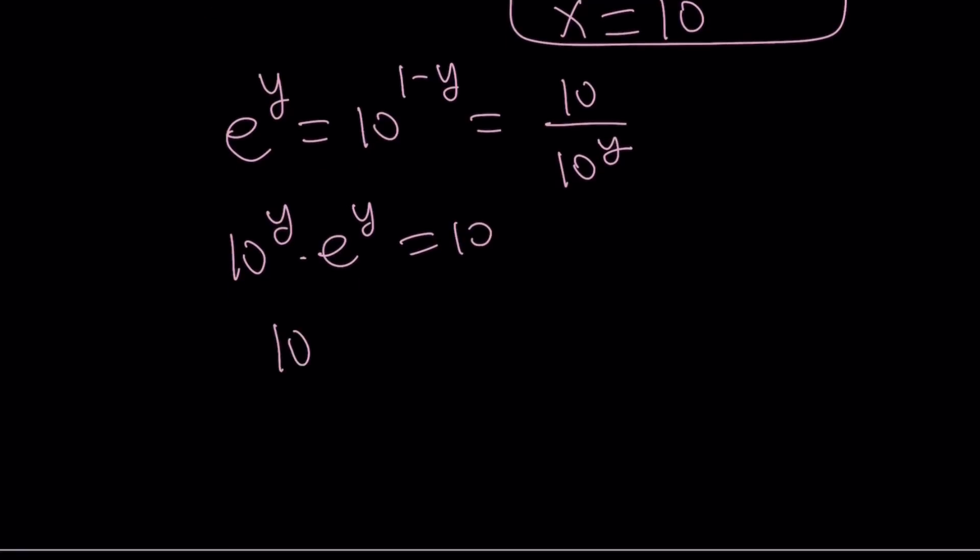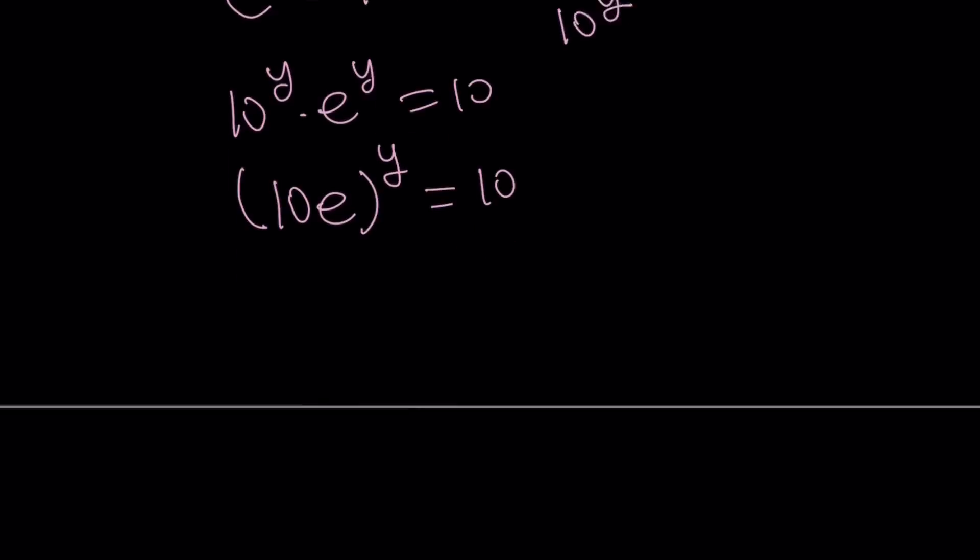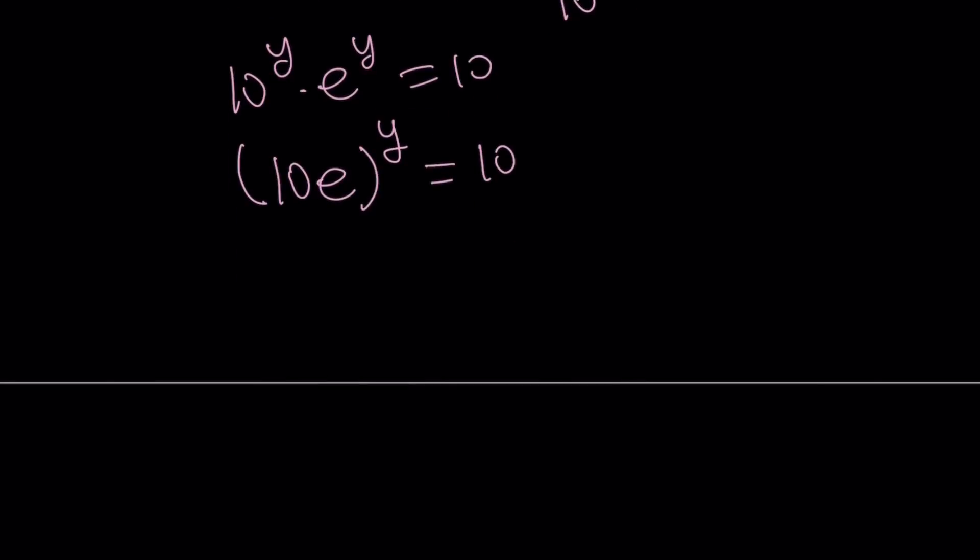Which can be written as 10 over 10 to the power y. Let's go ahead and cross multiply. 10 to the y e to the y equals 10. I can write this with the same exponent. 10 e quantity to the power y equals 10.